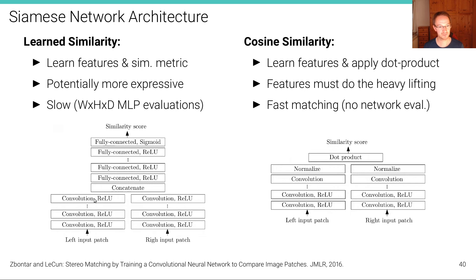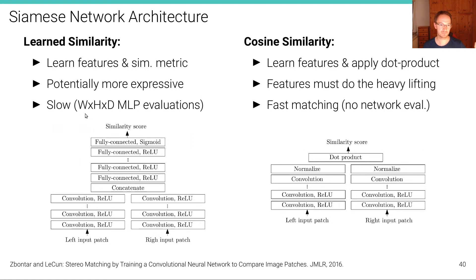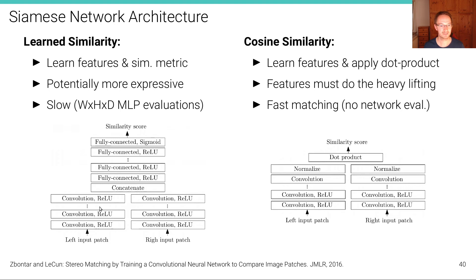It's a Siamese network — called Siamese because it has two branches that are identical and share parameters. The same convolutional neural network is applied to both the left and right input patches. However, the concatenation-plus-MLP part is expensive: for every pixel, we have W×H pixels in the reference image times all possible disparity hypotheses — perhaps 300,000 times 100 for a VGA-resolution image. This means a very large number of MLP evaluations, making the approach very slow.